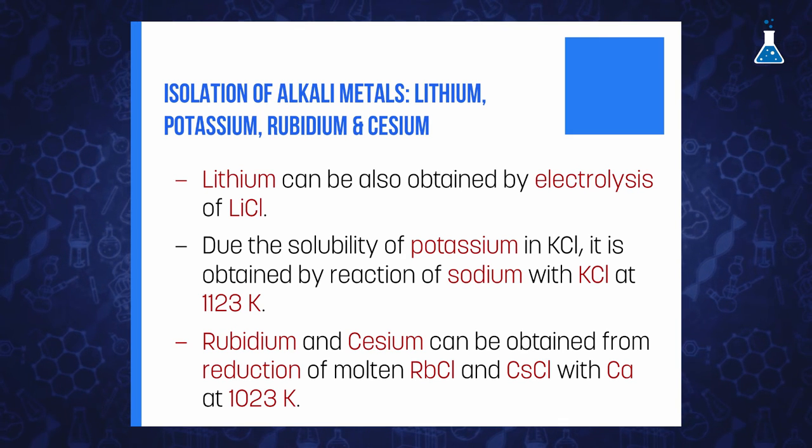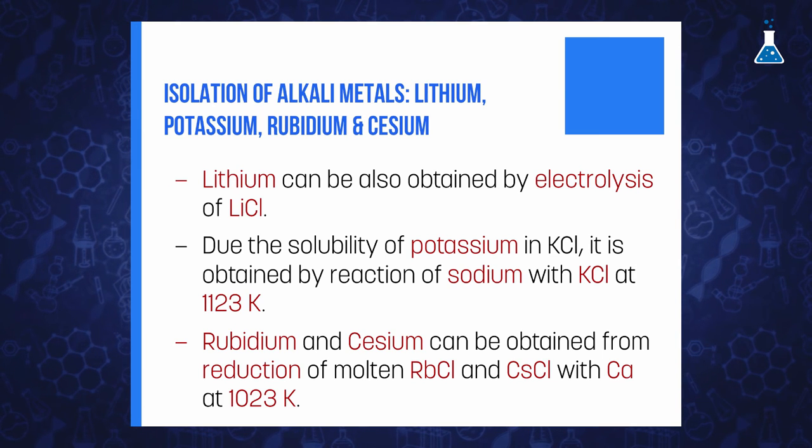Similarly, rubidium and cesium can be obtained from rubidium chloride and cesium chloride using calcium at 1023 Kelvin under reduced pressure.